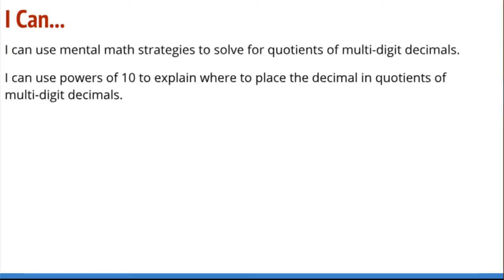Looking at the ICANN statements: I can use mental math strategies to solve for quotients of multi-digit decimals. We went through many mental math strategies — hopefully you're seeing some you can apply. Don't just get locked into a fixed set of steps. Look at each new division problem and ask yourself what strategies you have available, instead of always doing the same thing. Unless what you always do is ask: can I make this friendlier?